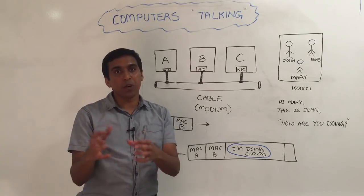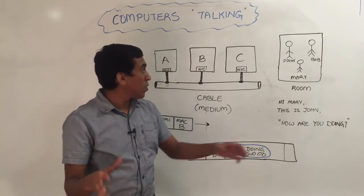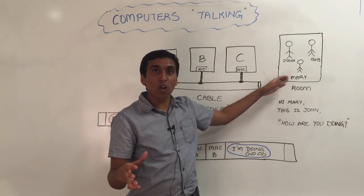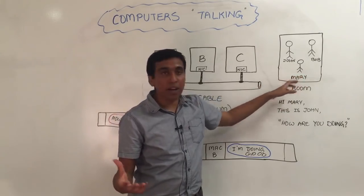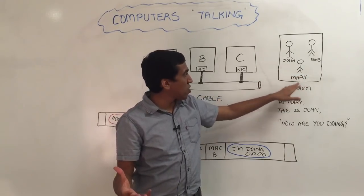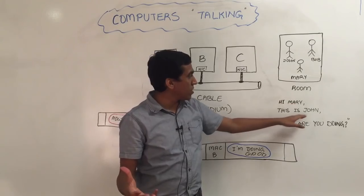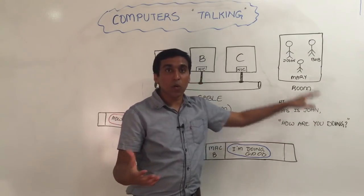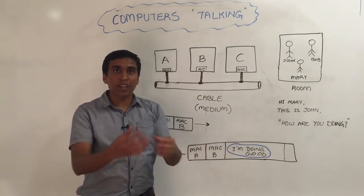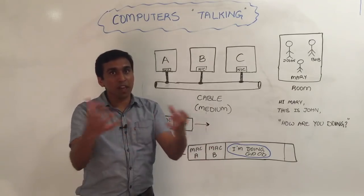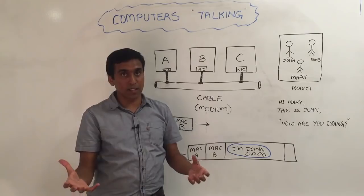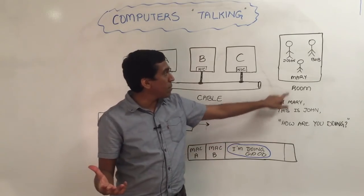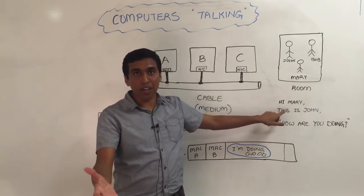We will see how computers talk. Before we do that, I would like to give you an analogy of how people talk. In this room, we have John, Bob and Mary. And when John wants to talk to Mary, he says, Hi Mary, this is John. How are you doing? Now, when they're in the same room, they're sharing the same medium, which is the air, and all of them, Bob and Mary, hear this message, but only Mary responds because it's addressed to Mary.